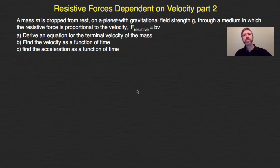So what we're going to specifically do is this: we have a mass m dropped from rest on a planet with gravitational field strength g, and it's dropped through a medium in which the resistive force is again proportional to the velocity, f resistive equals bv.